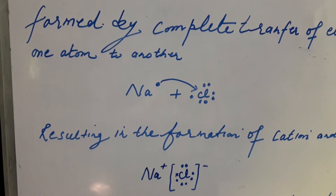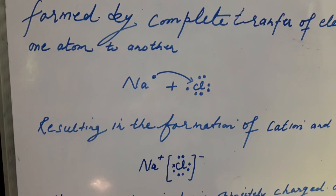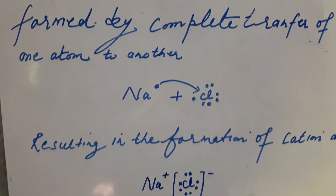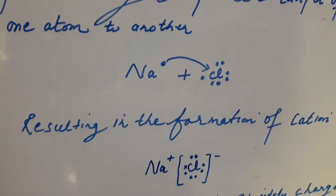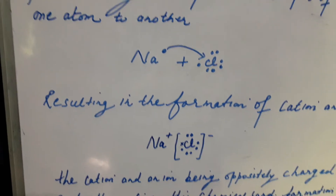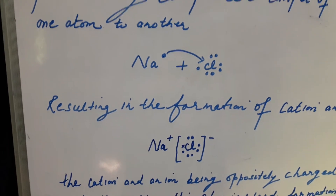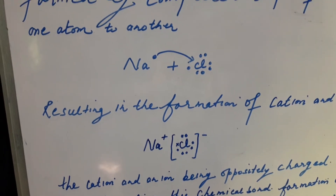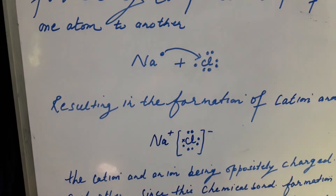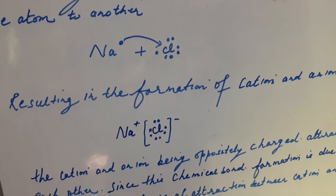Whereas chlorine's electronic configuration is 2, 8, 7. So in order to obtain a stable electronic configuration, it has to gain one electron. Therefore sodium will donate one electron and chlorine will gain one electron to obtain a stable electronic configuration, resulting in the formation of a cation and an anion.